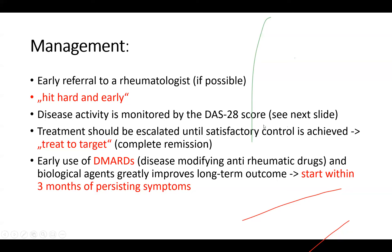Disease activity is monitored by the DAS score. Treatment should be escalated until you have satisfactory control over the disease, which is called treat-to-target. You want the patient to be in complete remission — you're not happy if the patient just feels a little bit better. The early use of disease-modifying anti-rheumatic drugs, called DMARDs, and biological agents greatly improves long-term outcome. You should start within three months of persisting symptoms.